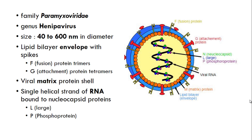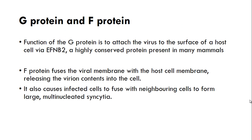The matrix protein shell under the envelope encloses a genome made up of a single helical strand of RNA bound to nucleocapsid proteins. These nucleocapsid proteins are mainly of two types: large proteins designated as L and phosphoproteins designated as P, and all of these are shown in the diagram.